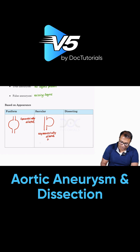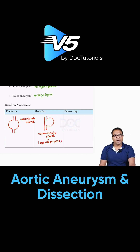Saccular aneurysm has a high risk of rupture. High risk of rupture is present in saccular aneurysm — don't forget this. Compared to fusiform, saccular has more risk of rupture.